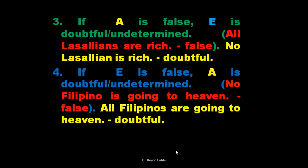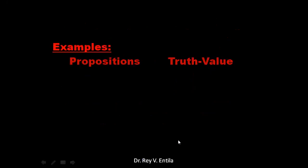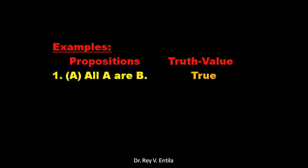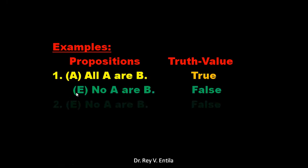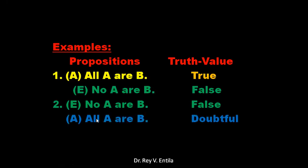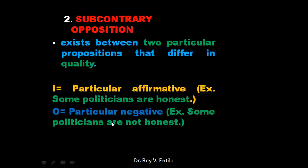This is very important because in our dealings with day-to-day life, we can contradict ourselves or say something true or false, and we can detect whether something is true or false. Synopsis: A true, E false; E true, A false; A false, E doubtful — 'No A are B' is doubtful. Number two: E false, A doubtful — 'All A are B' is doubtful.